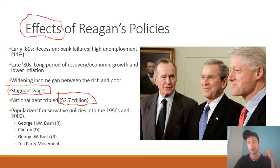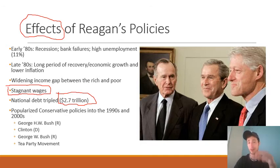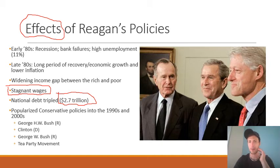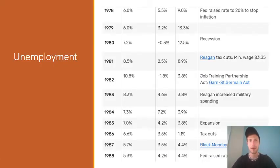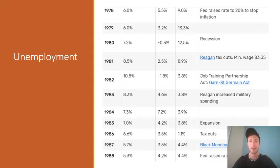George H.W. Bush continued conservative policies. Bill Clinton was a Democrat but still signed into law a lot of conservative policies. George W. Bush was another Republican, and the Tea Party movement came about during Barack Obama's presidency. Then Donald Trump was elected as a Republican on a fairly conservative economic platform. Here are some economic indicators over time so you can see the effects of these economic policies.